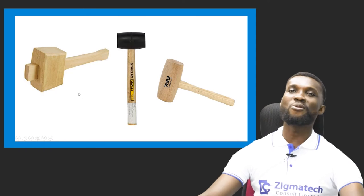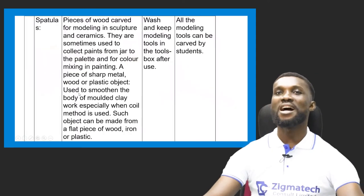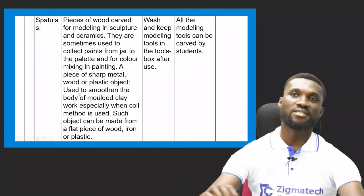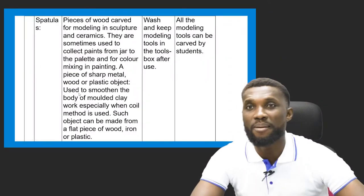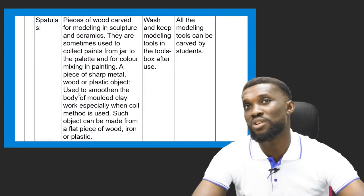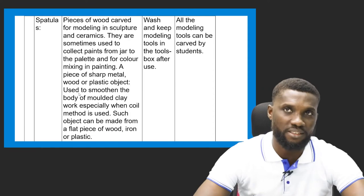This is the perfect example of a mallet. These two are the wooden mallets, and this one is the rubber mallet. They are very familiar tools. Now let's move on to the next material, which is known as the spatula.